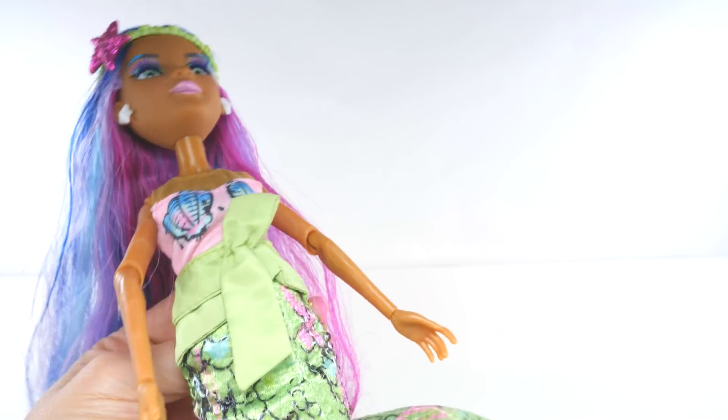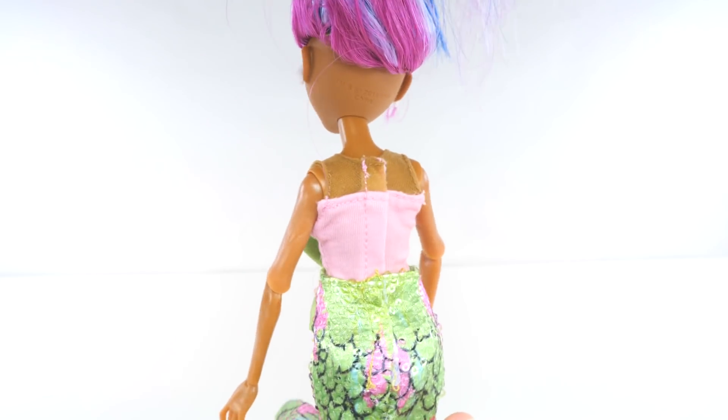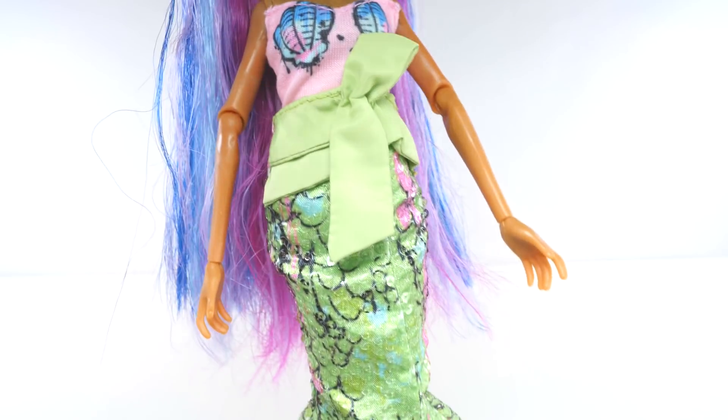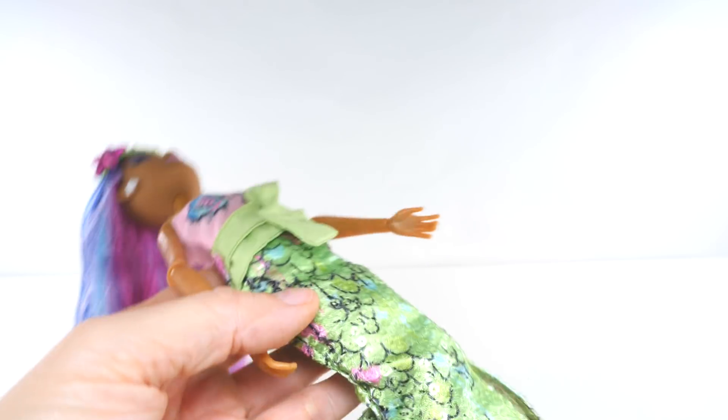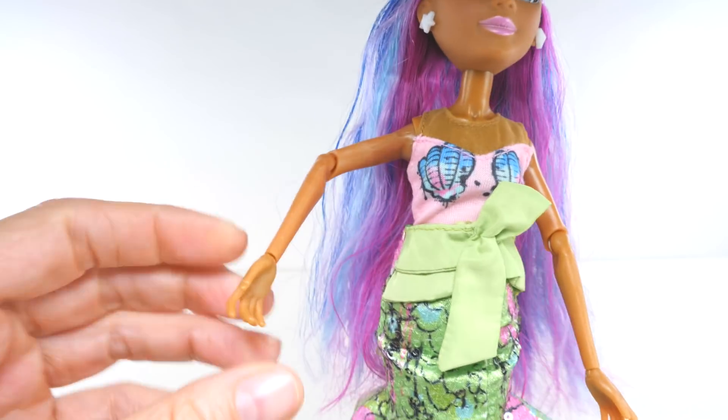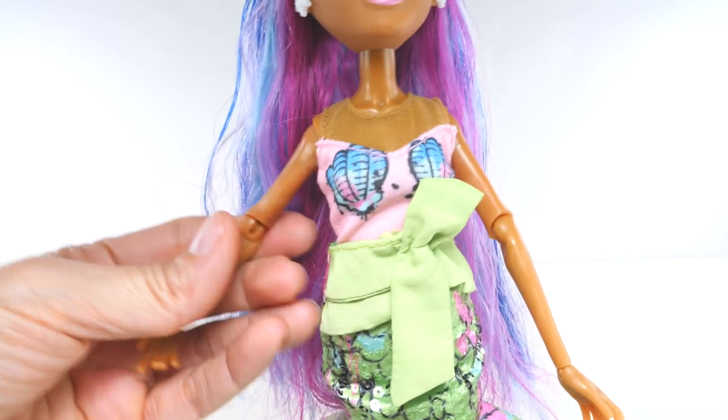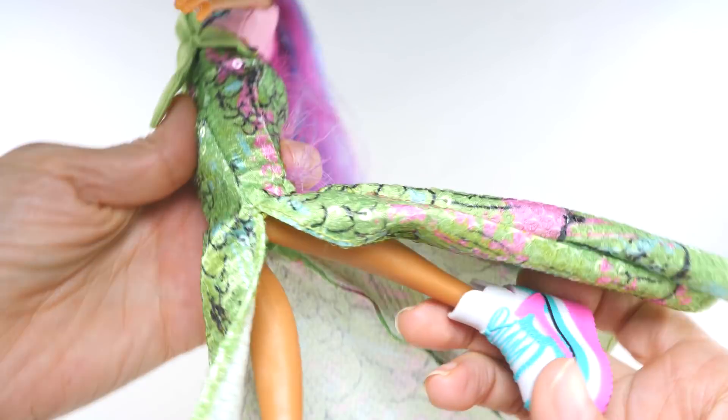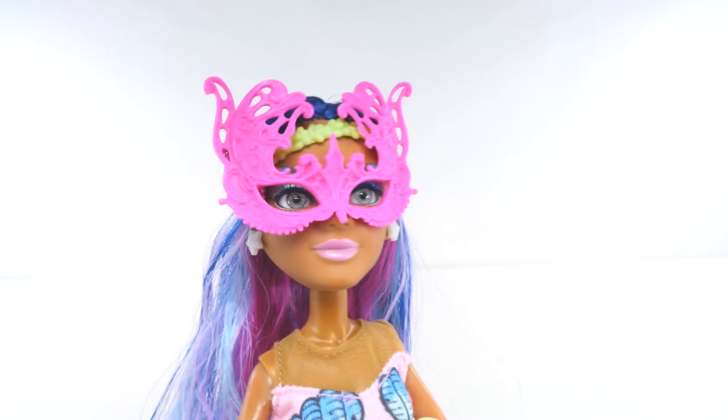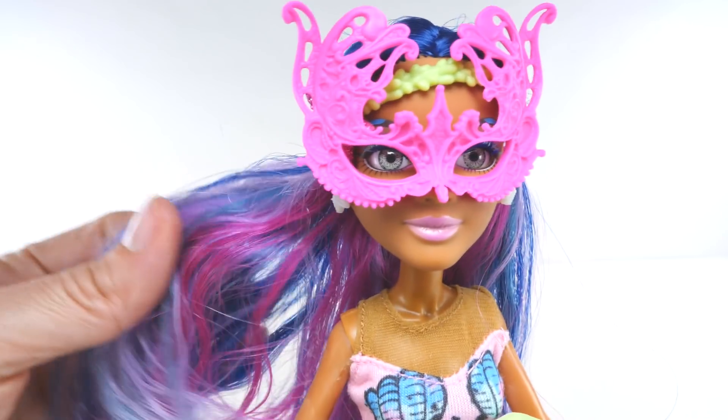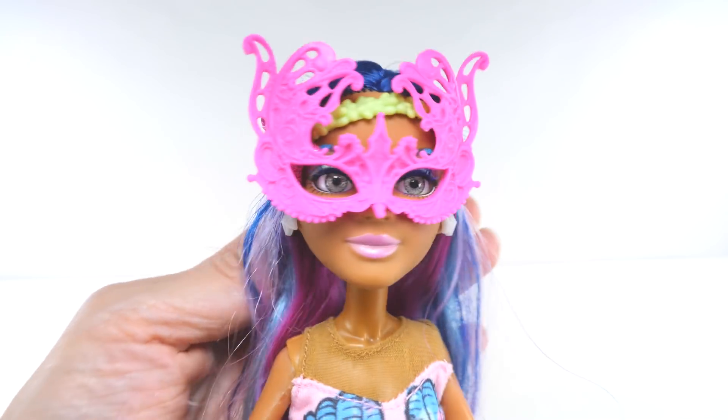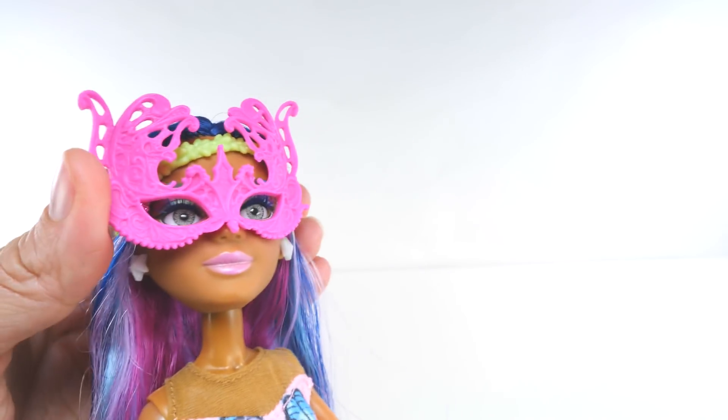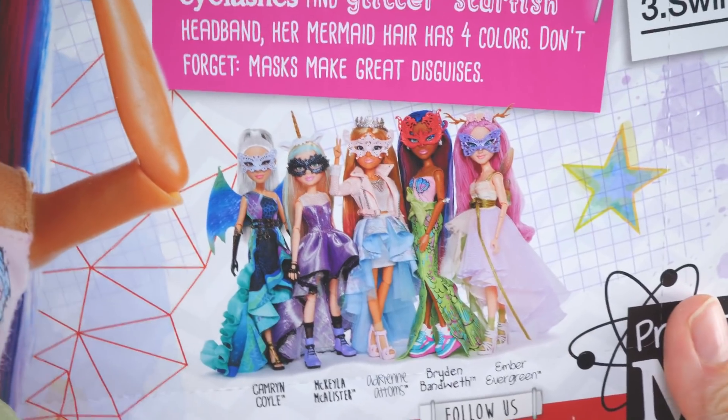She's super articulated, that's why she just fell back like that. So she bends at the elbows, the knees, the wrists, and she comes with this really cool mask so she can be undercover at the prom. Isn't that cool?